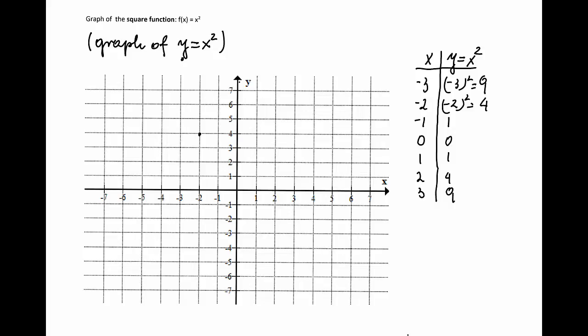For negative 1 is the point 1. For 0 is the point 0, 0. For x is equal to 1, y is equal to 1. For x is equal to 2, y is equal to 4. And for x is equal to 3, y is equal to 9.